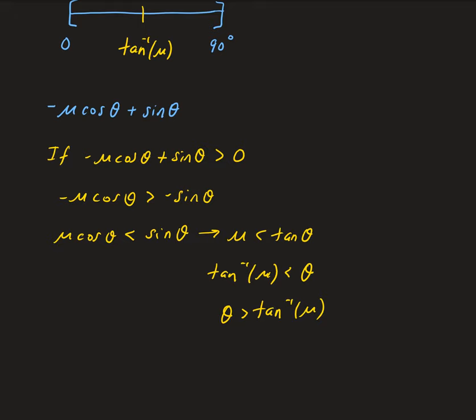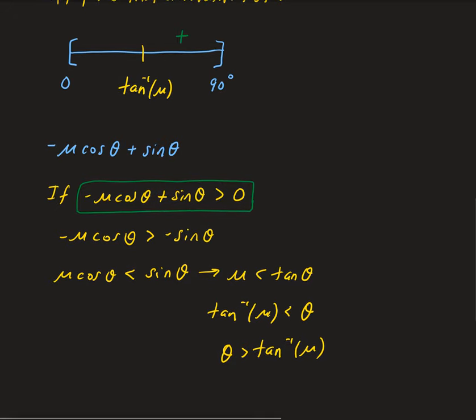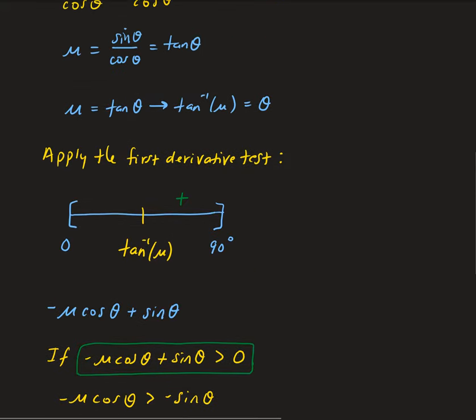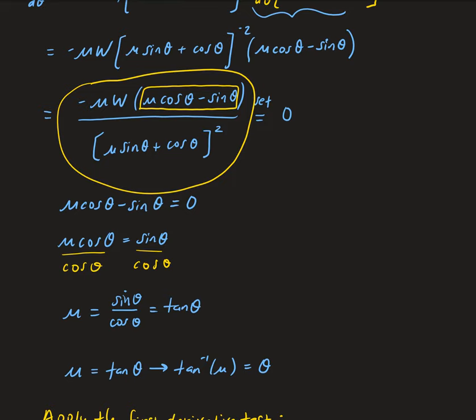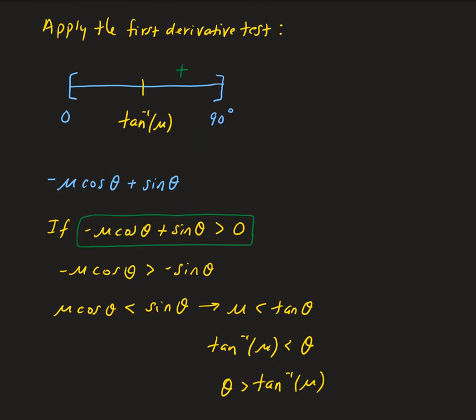So that tells us the derivative will be positive when theta is strictly bigger than arctan(mu) — it's positive between arctan(mu) and 90 degrees. The denominator is always positive and mu and W are positive, so the derivative is indeed positive in that interval.